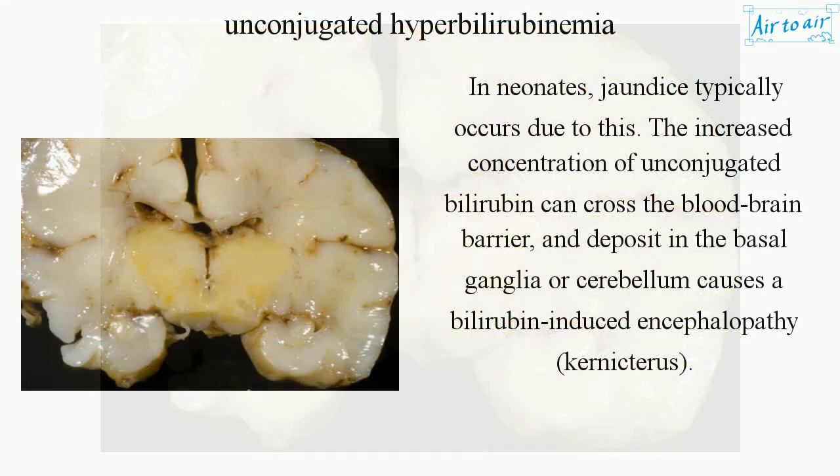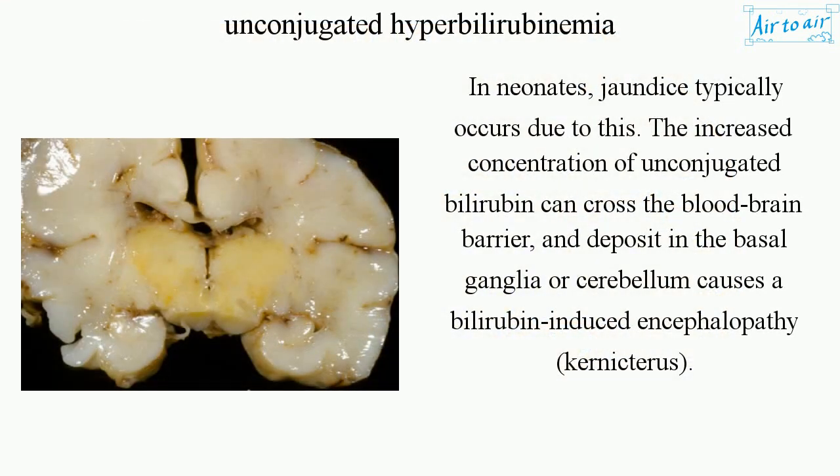In neonates, jaundice typically occurs due to this. The increased concentration of unconjugated bilirubin can cross the blood-brain barrier and deposit in the basal ganglia or cerebellum, causing a bilirubin-induced encephalopathy known as kernicterus.